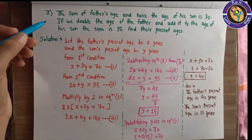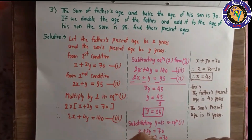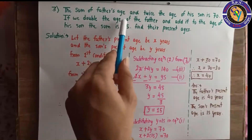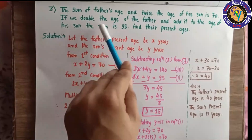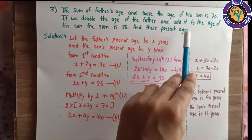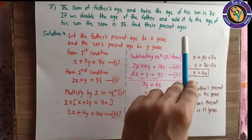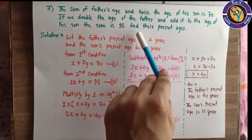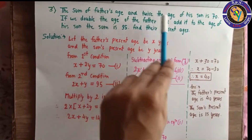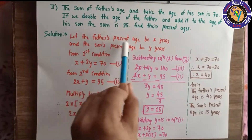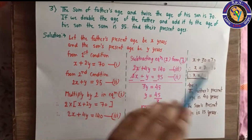Now let's move to the third sum. The sum of the father's age and twice the age of his son is 70. If you double the age of the father and add it to the age of his son, the sum is 95. Find their present ages. Let the father's present age be x years and the son's present age be y years.